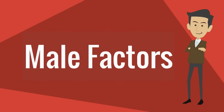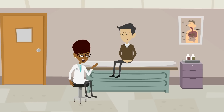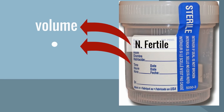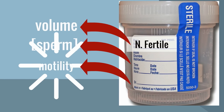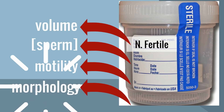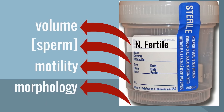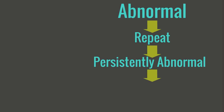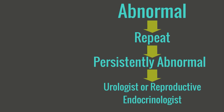Let's start with male factors. The male needs to produce a good sperm. The evaluation of male infertility involves a semen analysis, obtained by masturbation after two to three days of abstinence. A semen analysis evaluates the volume, sperm concentration, motility, rapid progression motility, and normal morphology. If the results are abnormal, the semen analysis should be repeated, and if persistently abnormal, the male factor should be evaluated by a urologist or reproductive endocrinologist who specializes in male infertility.